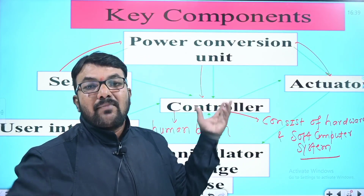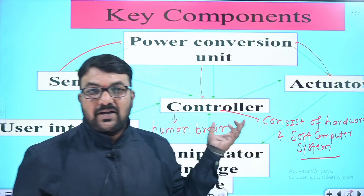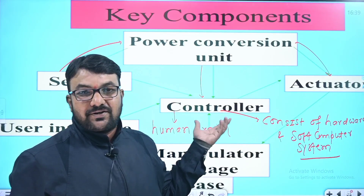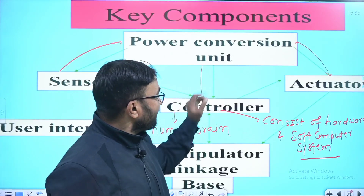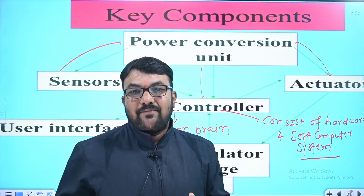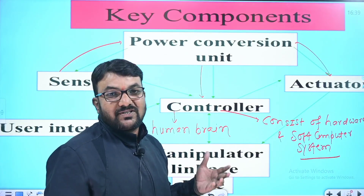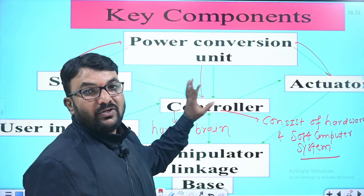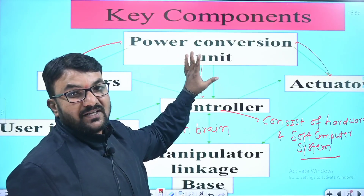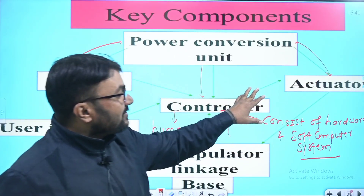We are using DC supply. UPS stands for Uninterrupted Power Supply. This is our power conversion unit. The actuators are the most powerful components in the process — the actuators act on the system.